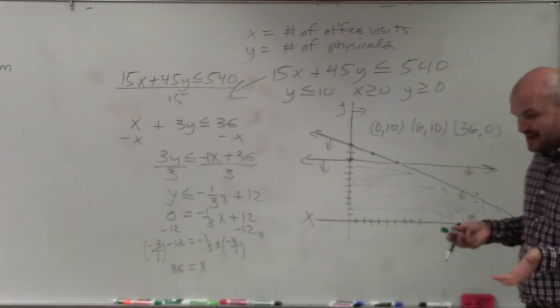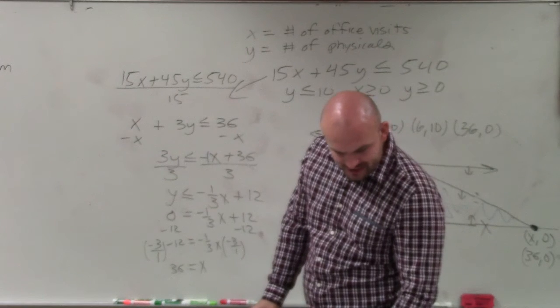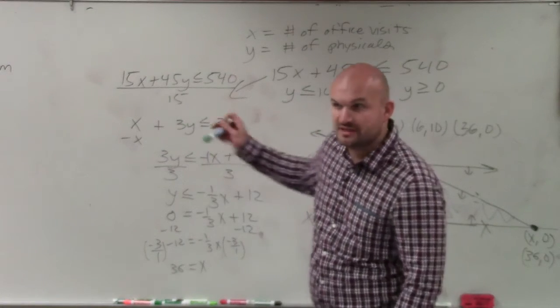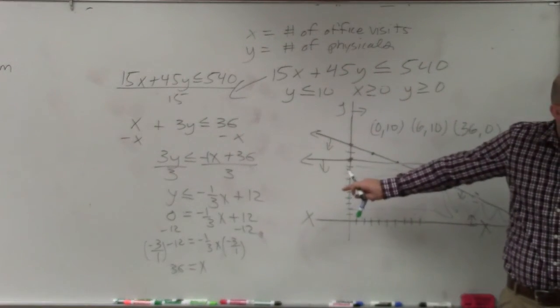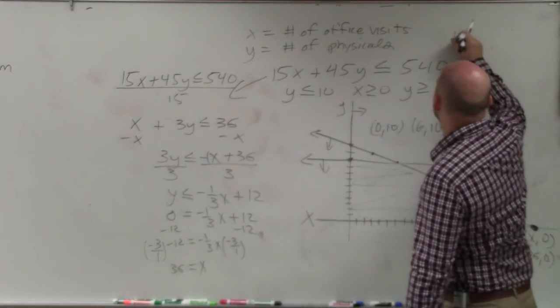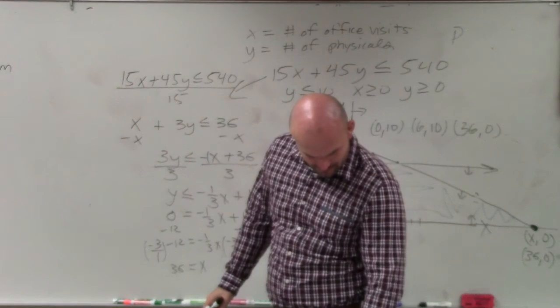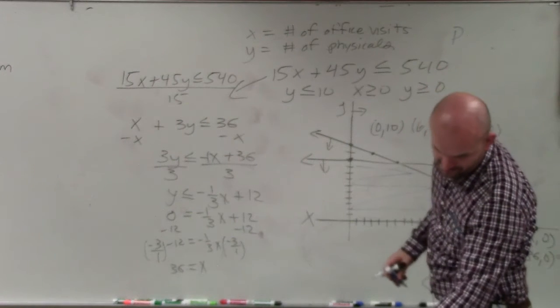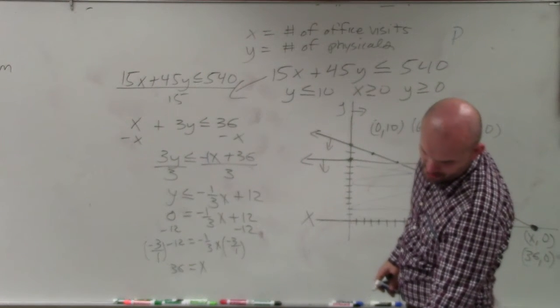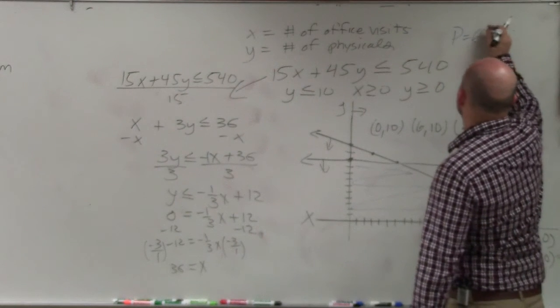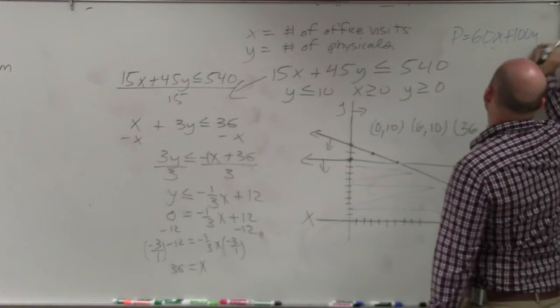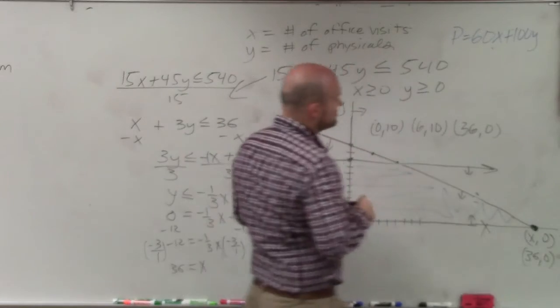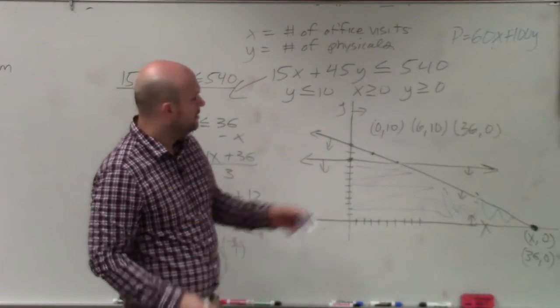But now we need to, well, what are we trying to maximize? Again, the problem says a routine office visit costs $60 and full physical costs $100. Do you guys understand how previously our constraints were dealing with time? Now he's trying to maximize cost, or how much money he brings in. He's trying to maximize income. So he gets $60 for an office visit and $100 for a physical. So we could say 60x plus 100y. So now we need to plug in each one of these and see which one's going to work, which one's going to give us the maximum.